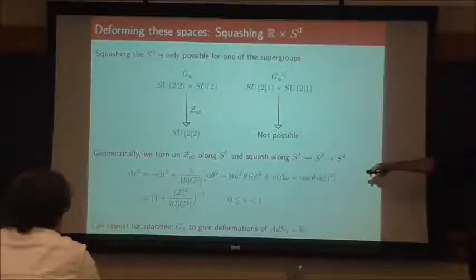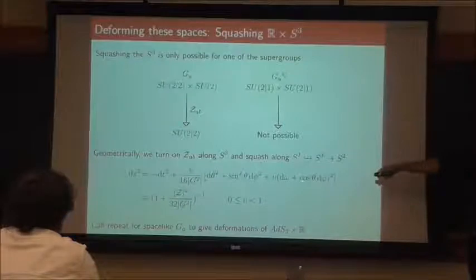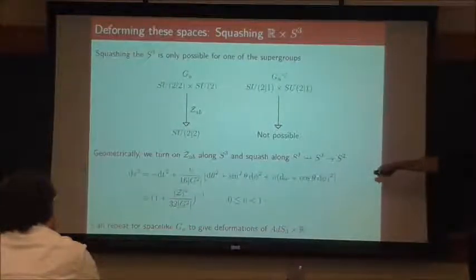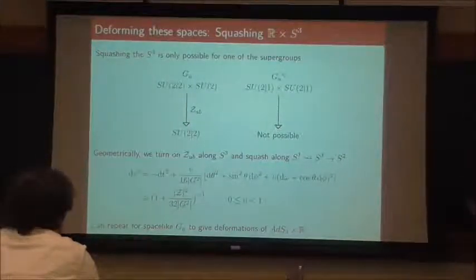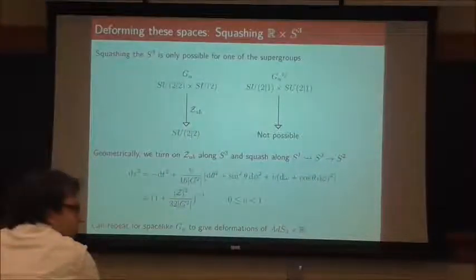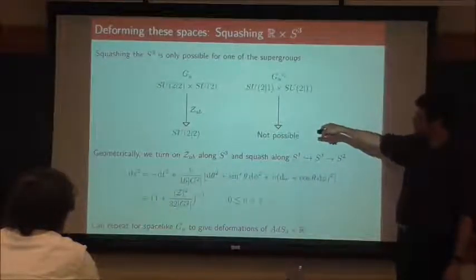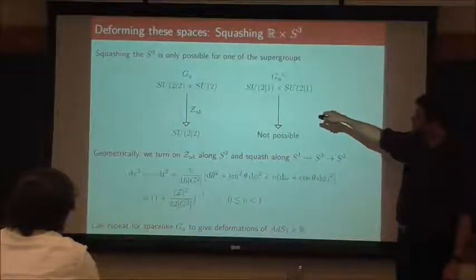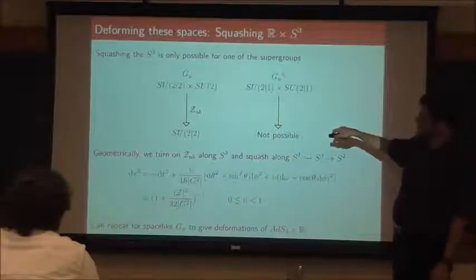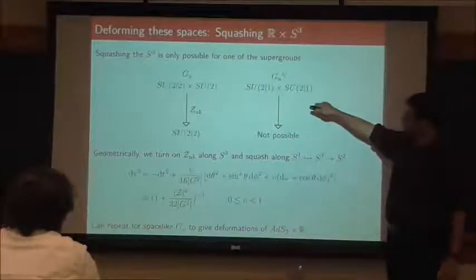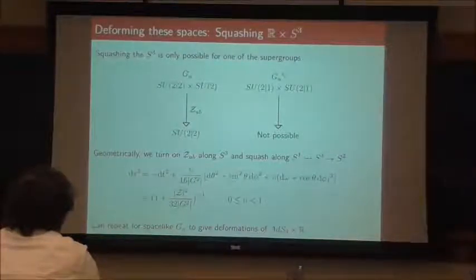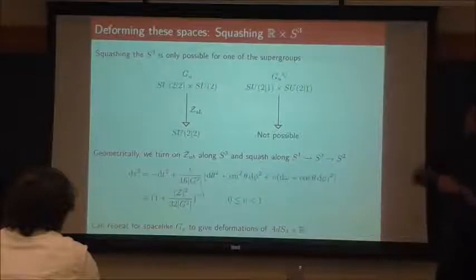Concretely: I can take the background where G is sourcing the R×S³, turn on Z, and squash the S³ preserving all eight supercharges. Geometrically, you're turning Z_{AB} on along the S³. If you think of S³ as an S¹ fibered over S², what you're doing is squashing the S¹ fiber. This breaks SU(2)×SU(2) — the spacetime group — to SU(2)×U(1). The SUSY algebra dictates that you're only allowed to do this squashing, and the parameter in front of the fiber has to be between 0 and 1 — it turns out to be built out of the ratio of Z to G.